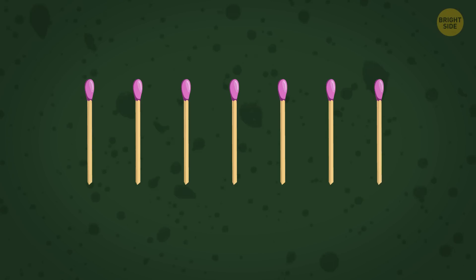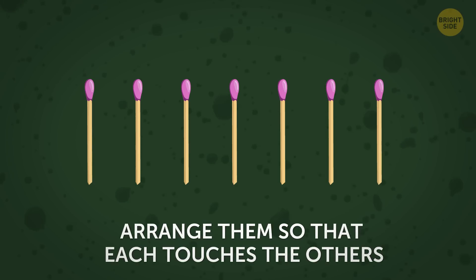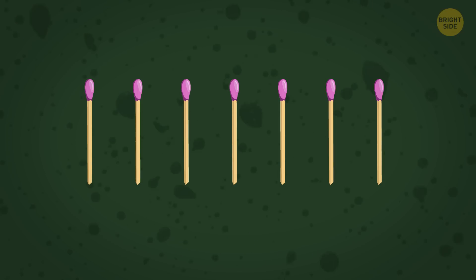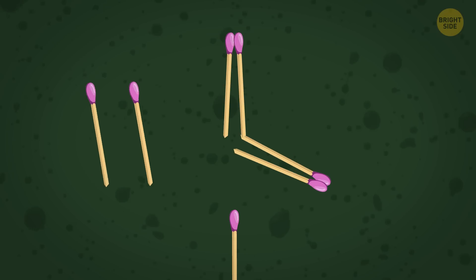There are 7 matchsticks on the table. The task is to arrange them so that each touches the others. Can you do that? Nobody said that all matchsticks have to be flat on the surface. So this is what the correct solution looks like from the top. You should put the 7th matchstick vertically at the center.